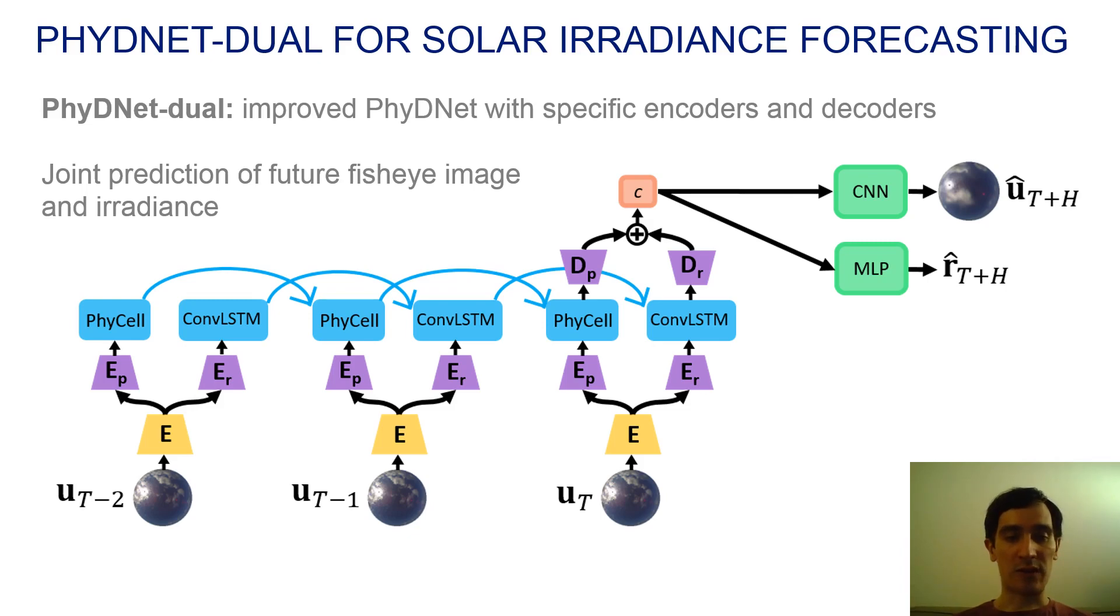We use this model to encode a sequence of fisheye images from t to T into a context vector C. This context vector summarizes all the previous seconds of images. We then plug a CNN to predict the 5-minute ahead image and a MLP for the future irradiance value.